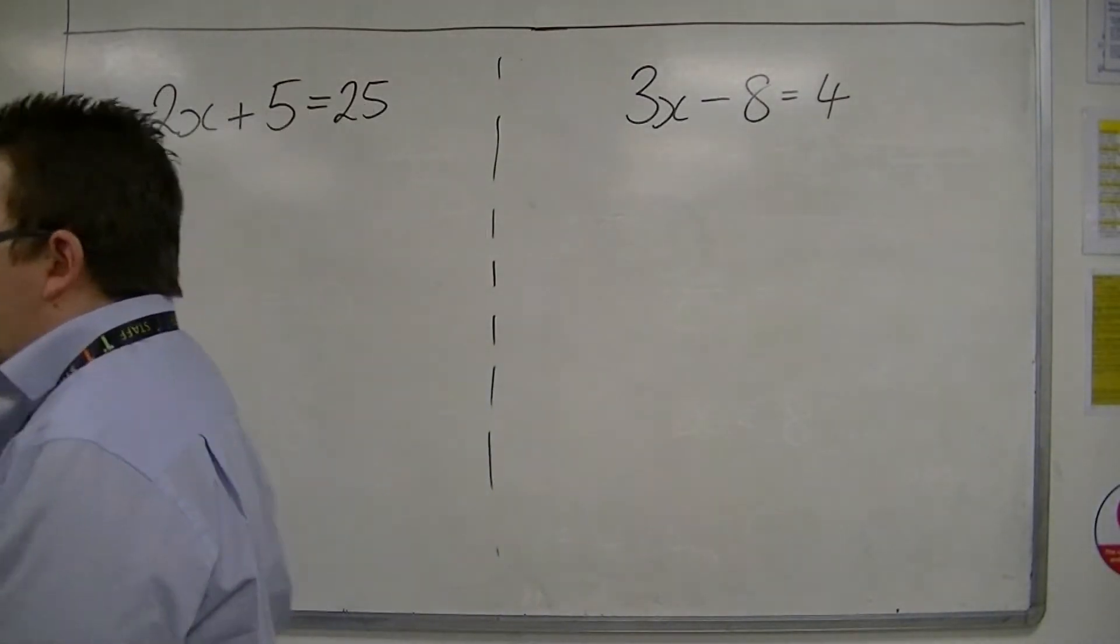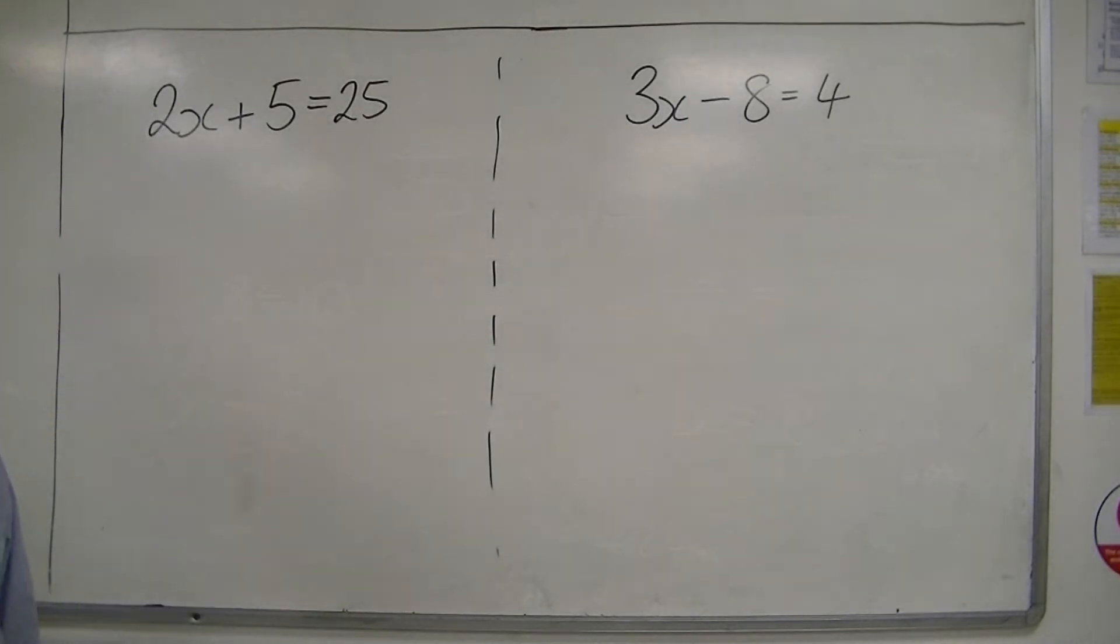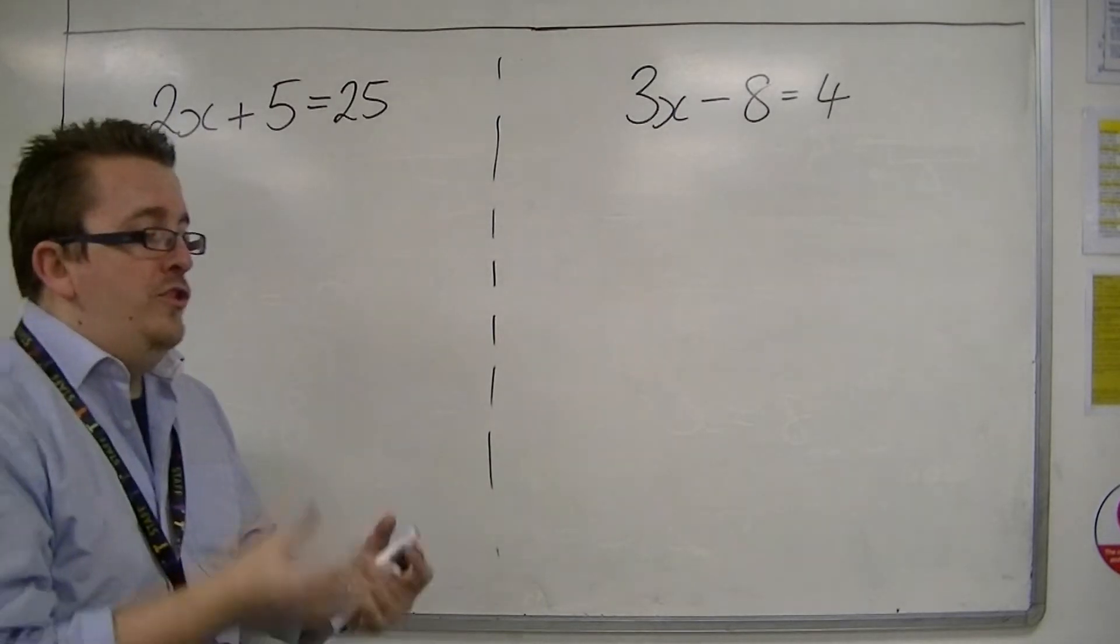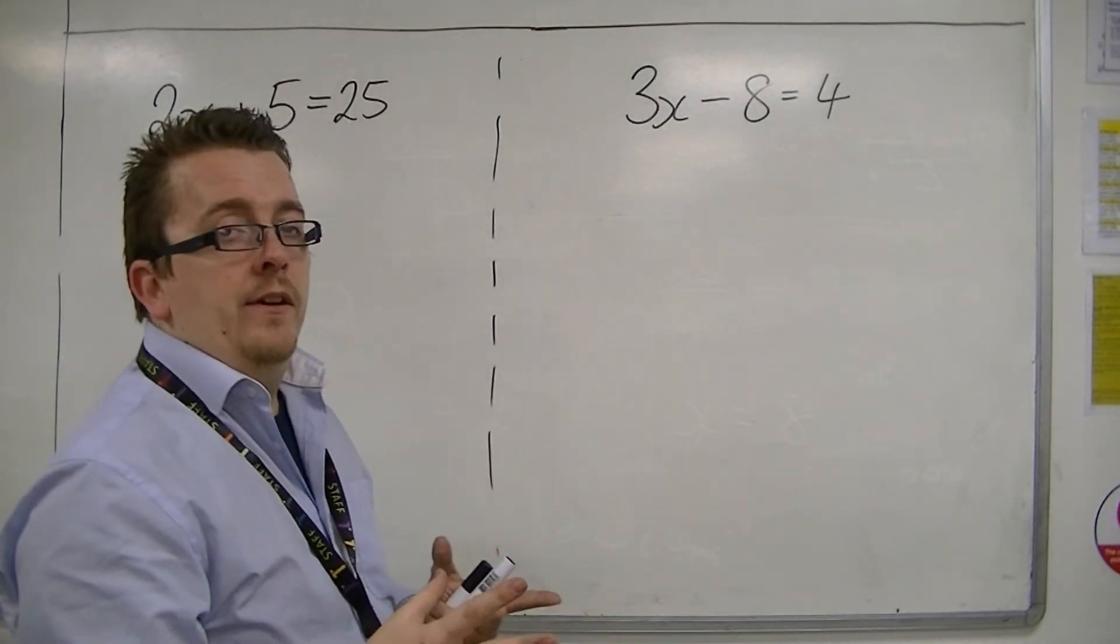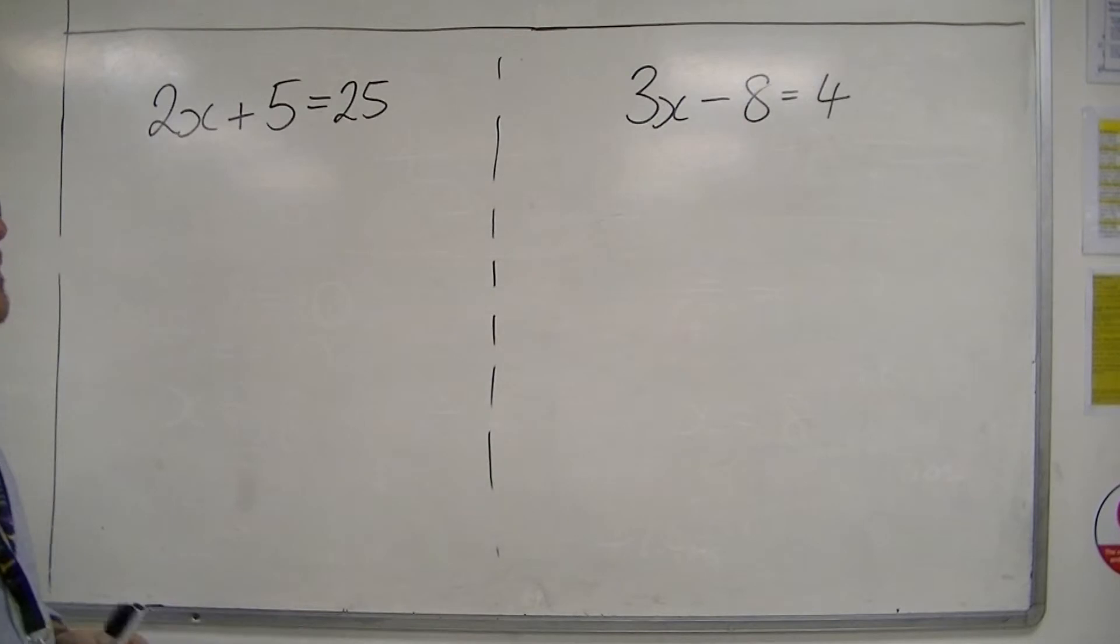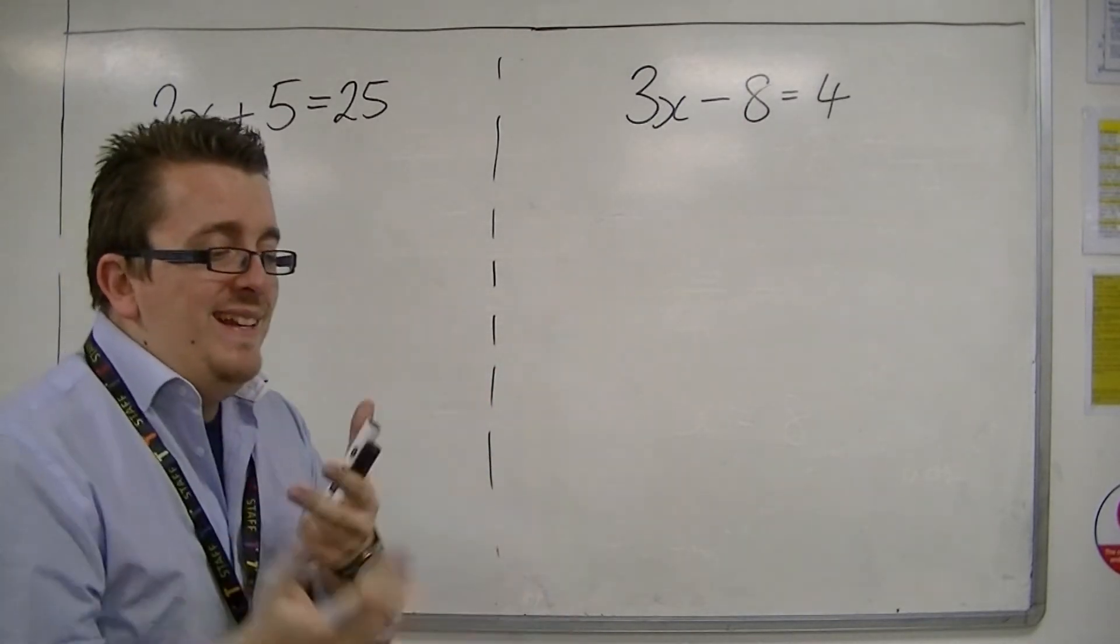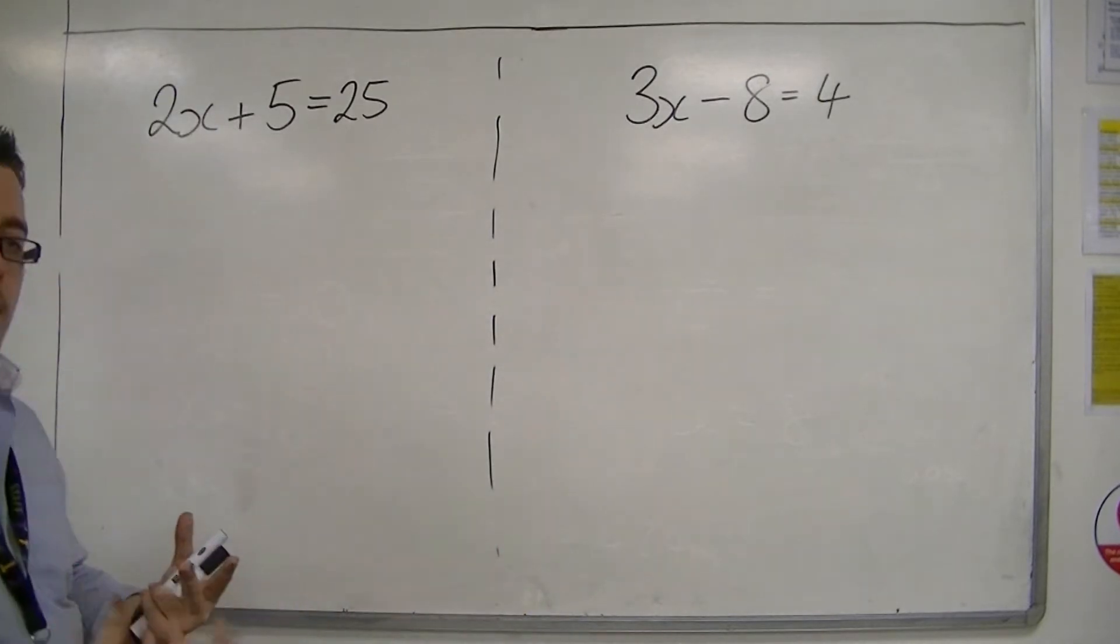The key thing from the previous video was that you want to get x by itself. You want to end up with just x equals at the end. No numbers, nothing added on to the x on the left-hand side, just x equals. And so you need to get everything away from the x.